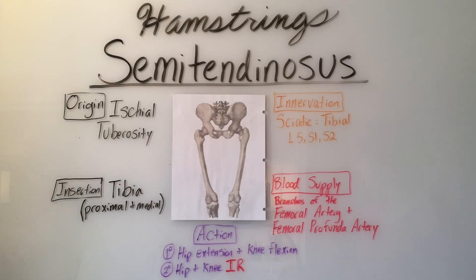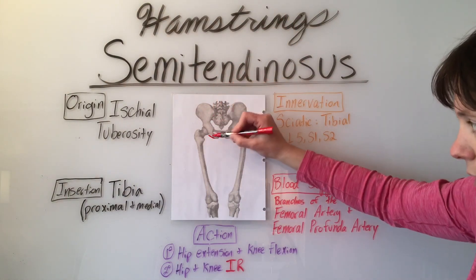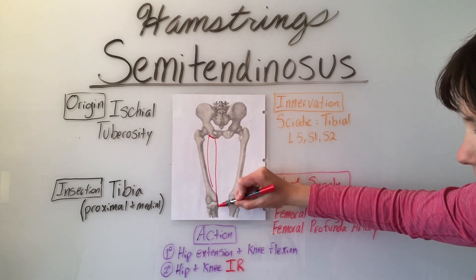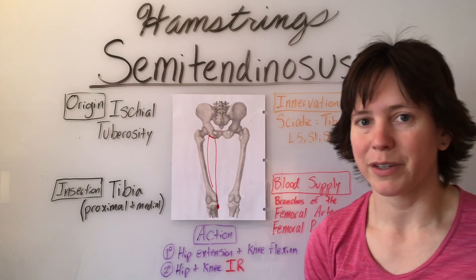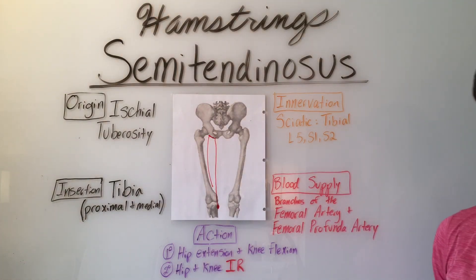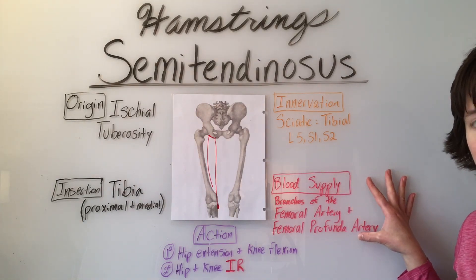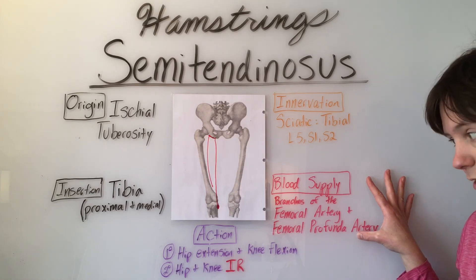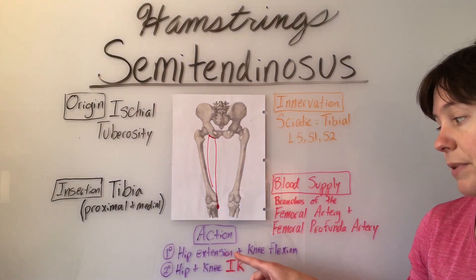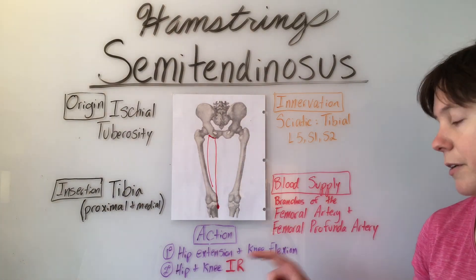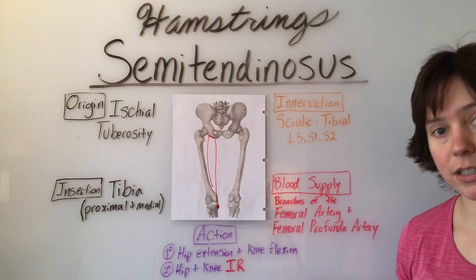The second member of the hamstrings family is the semitendinosus. It originates on the ischial tuberosity and comes down to insert on the tibia on the medial and proximal side by the pes anserine. Its innervation is the tibial division of the sciatic nerve, L5, S1, S2. Blood supply comes from branches of the femoral artery and the femoral profunda artery. Primary actions are the same as the biceps femoris — hip extension and knee flexion — but secondarily, the semitendinosus will perform hip and knee internal rotation.